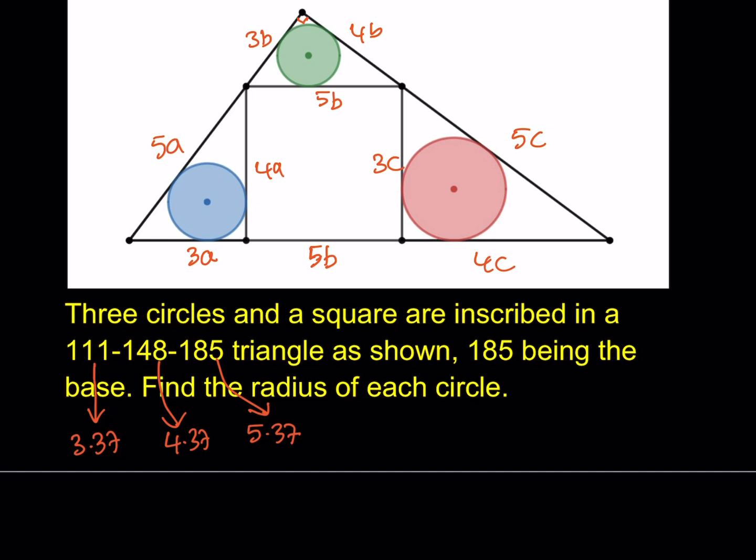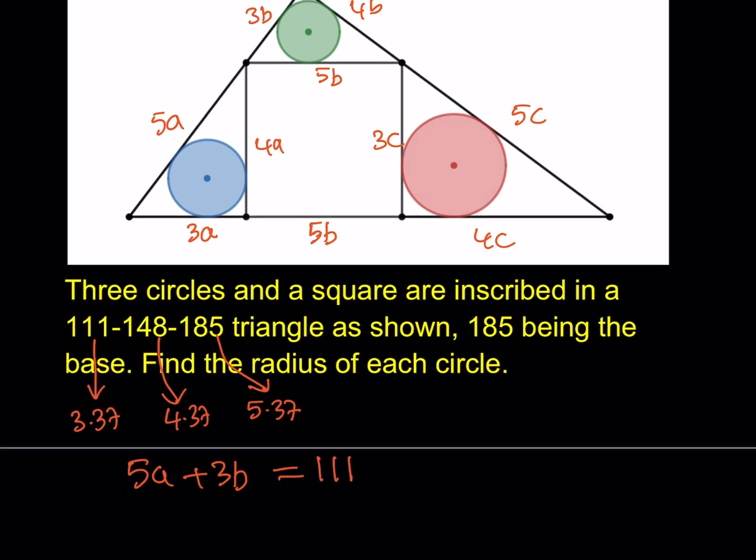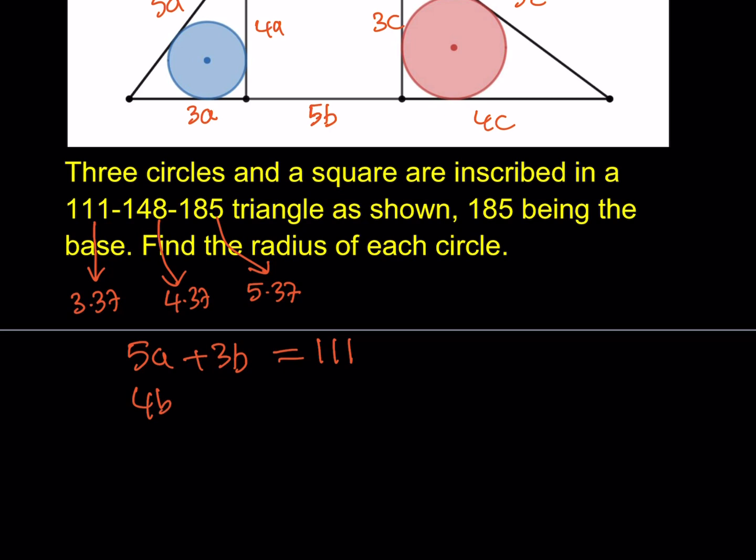I have 5A plus 3B. That's the shorter leg, which is 111. And then I have the longer leg, which is 4B plus 5C. That should be 148. And the hypotenuse is 3A plus 5B plus 4C equals 185.